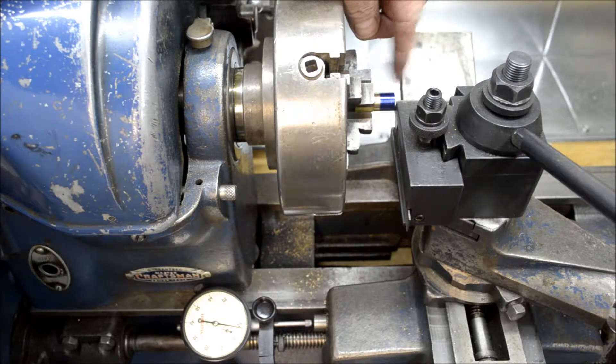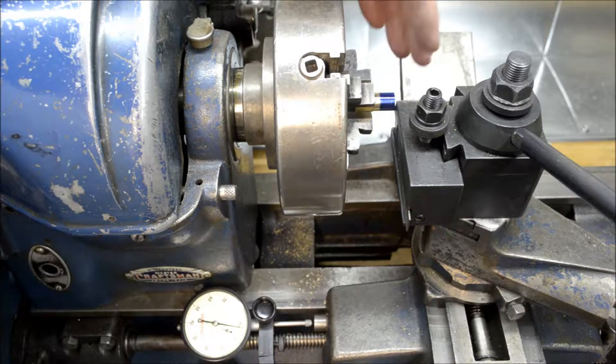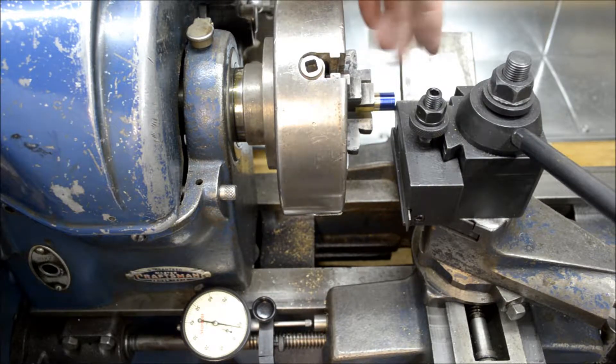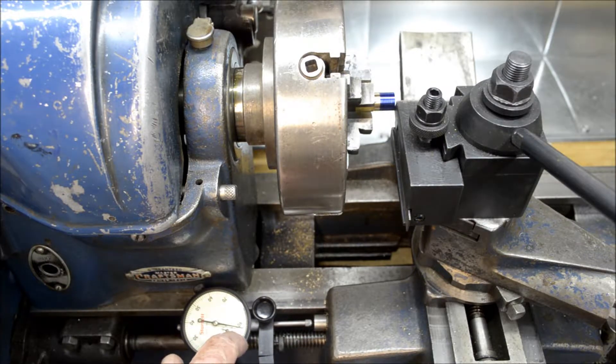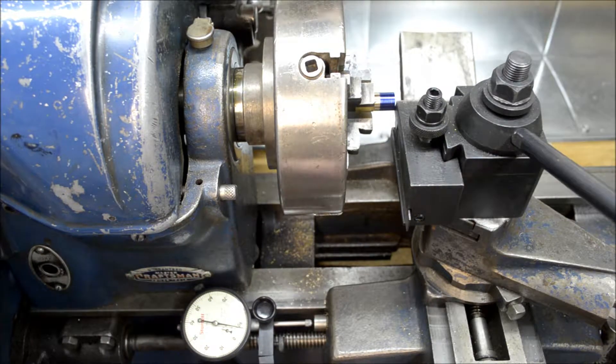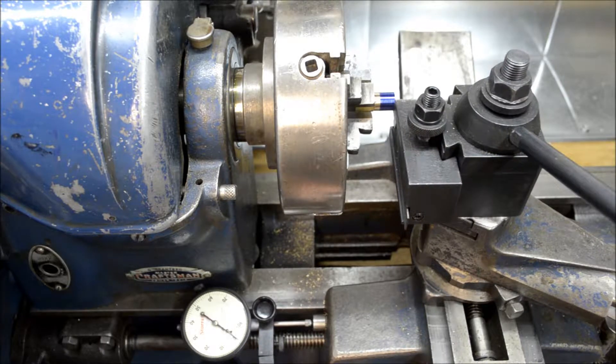So I turned this down to 498 off camera, just a simple turning operation. Took a few passes, got that nice. Now I got the dial indicator set up here, and this is going to be hard to do with the camera rolling.